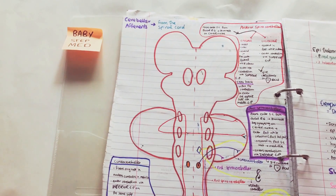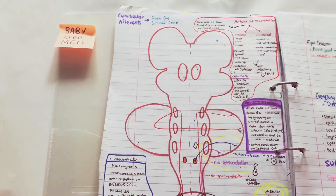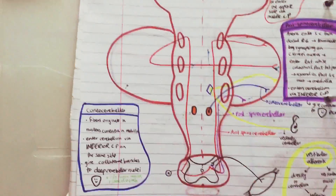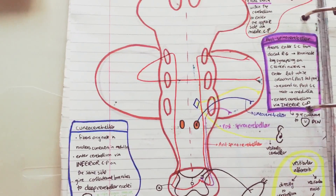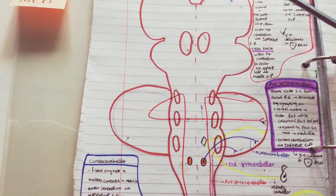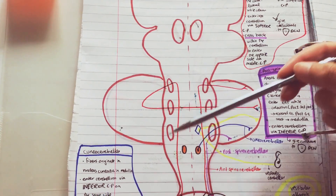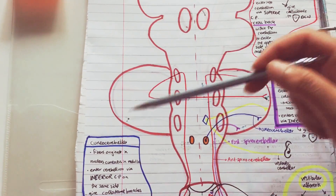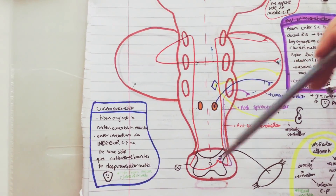Now we are on to the cerebellar afferents from the spinal cord. These look a bit confusing but they are very easy. To orient you: this is the cerebral cortex, this is the midbrain, these are the pons, this is the medulla, this is the cerebellum — that little dumbbell-shaped thing — and this is the spinal cord.